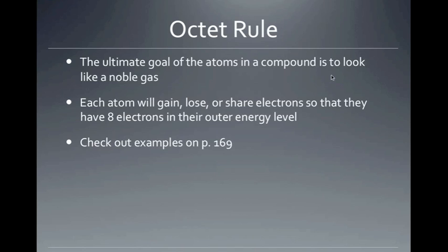When covalent bonds form, atoms want to become like a noble gas — this is the octet rule. The ultimate goal of an atom in a compound is to have 8 valence electrons. Atoms will gain, lose, or share electrons to achieve 8 electrons in the outer energy level. In covalent bonding, atoms share electrons so that each element ends up with 8 valence electrons.